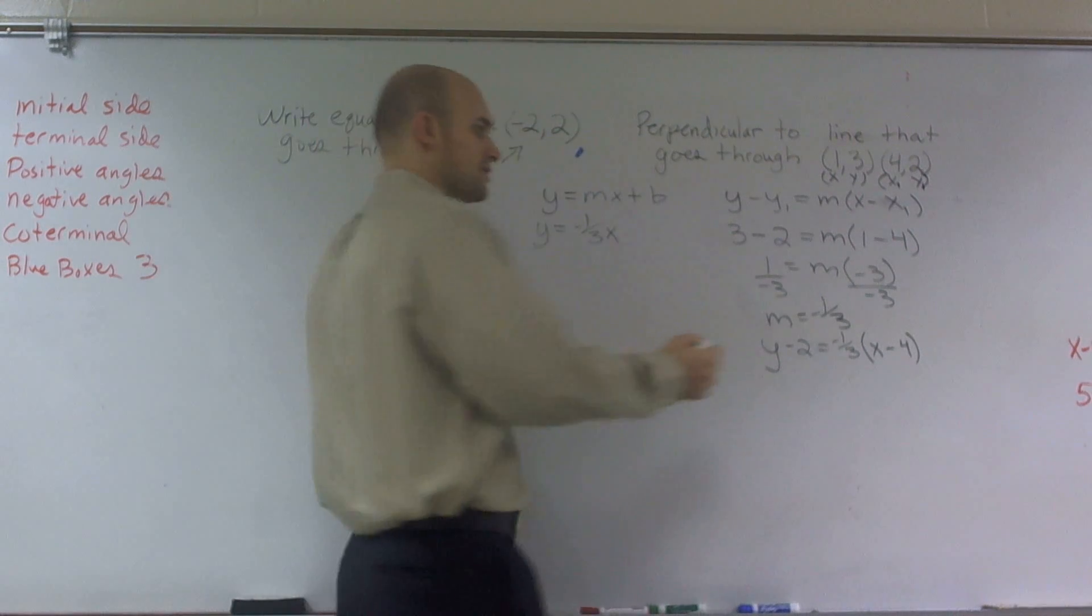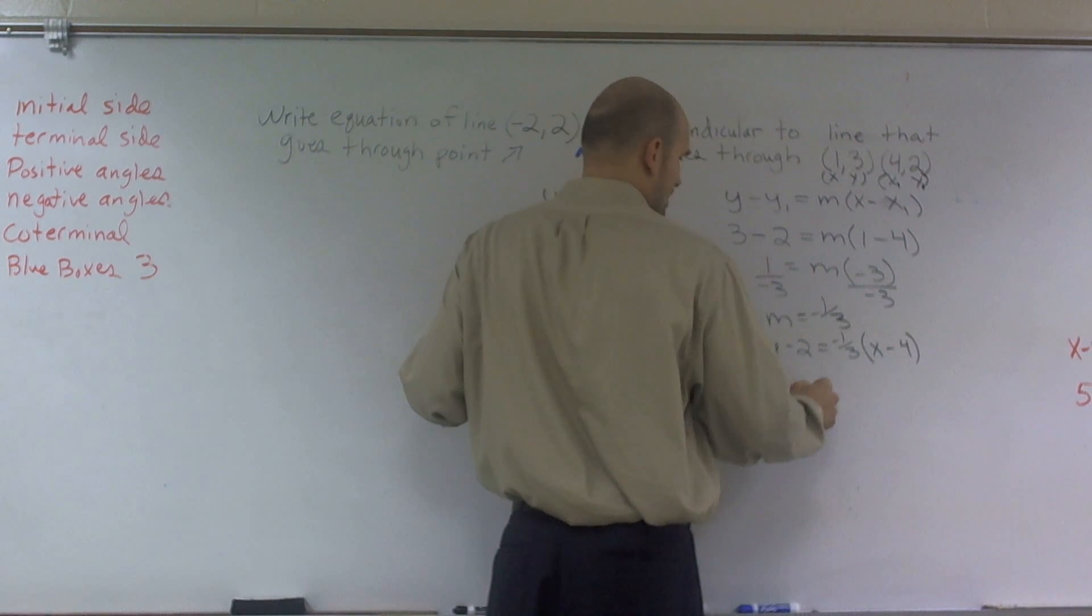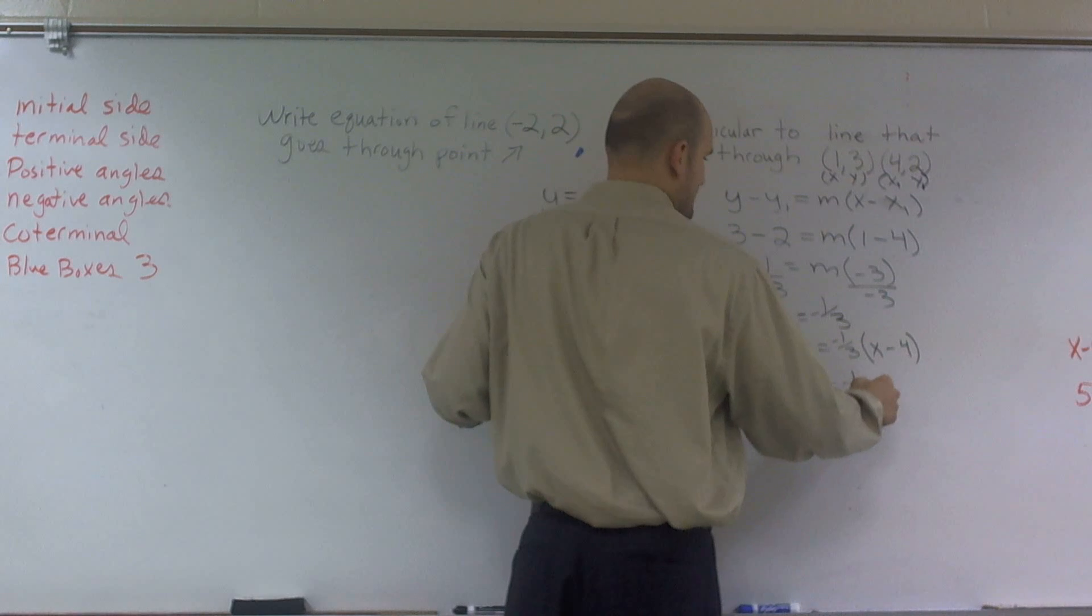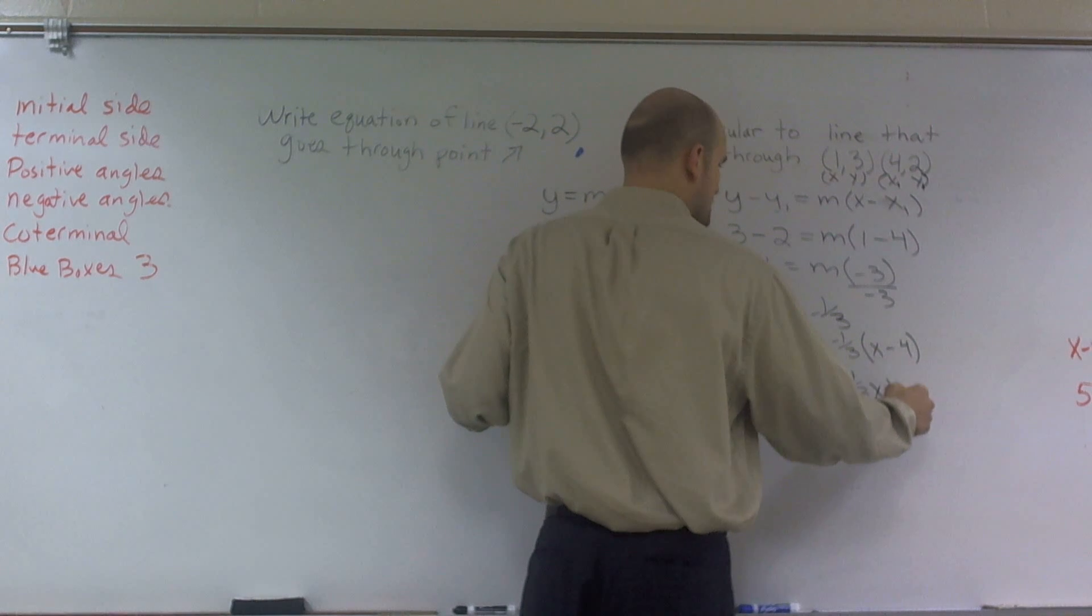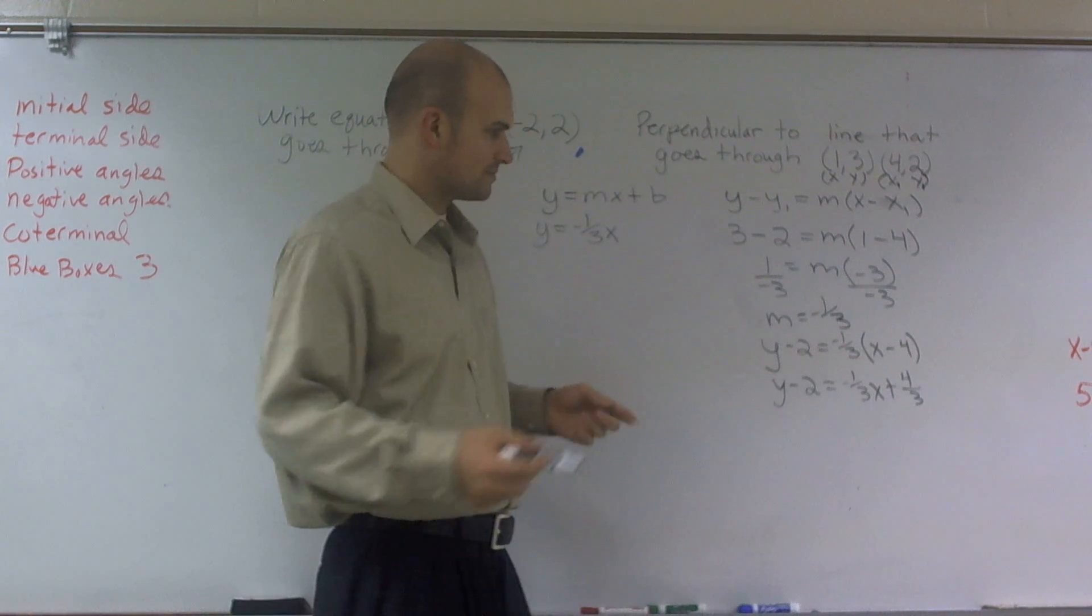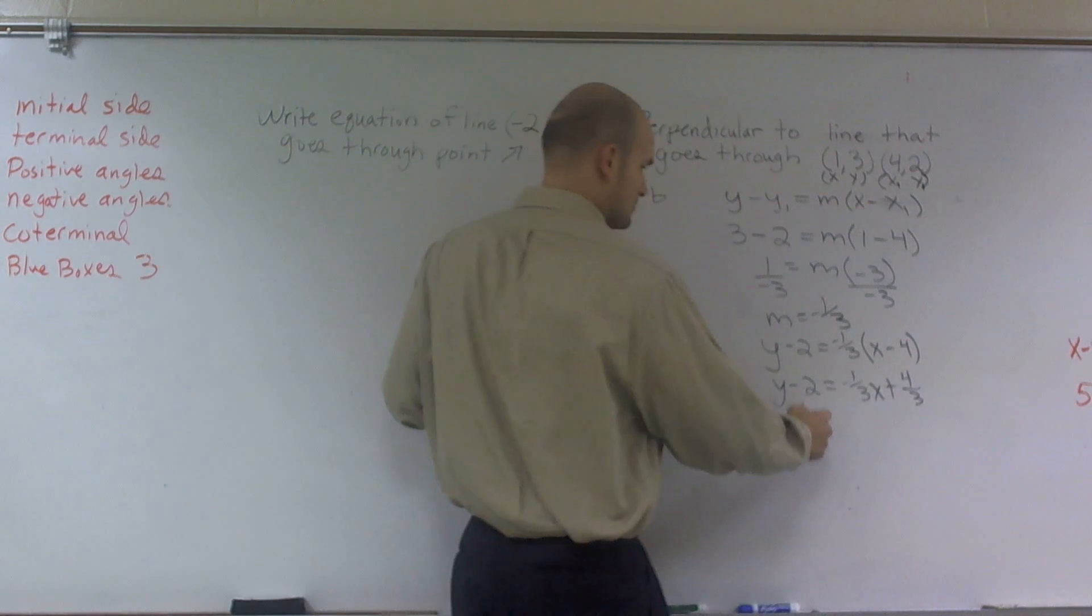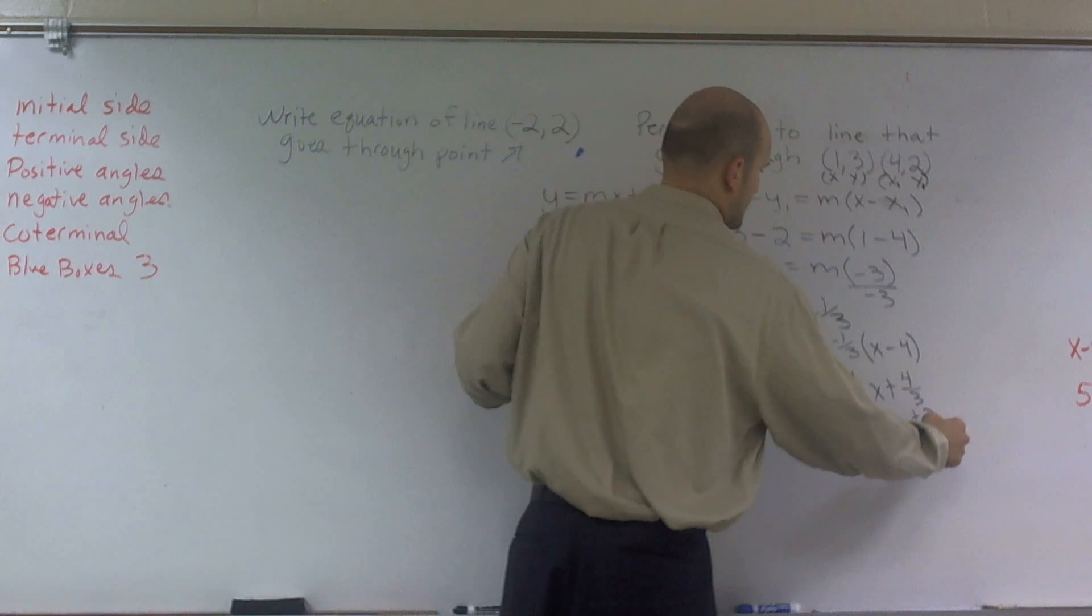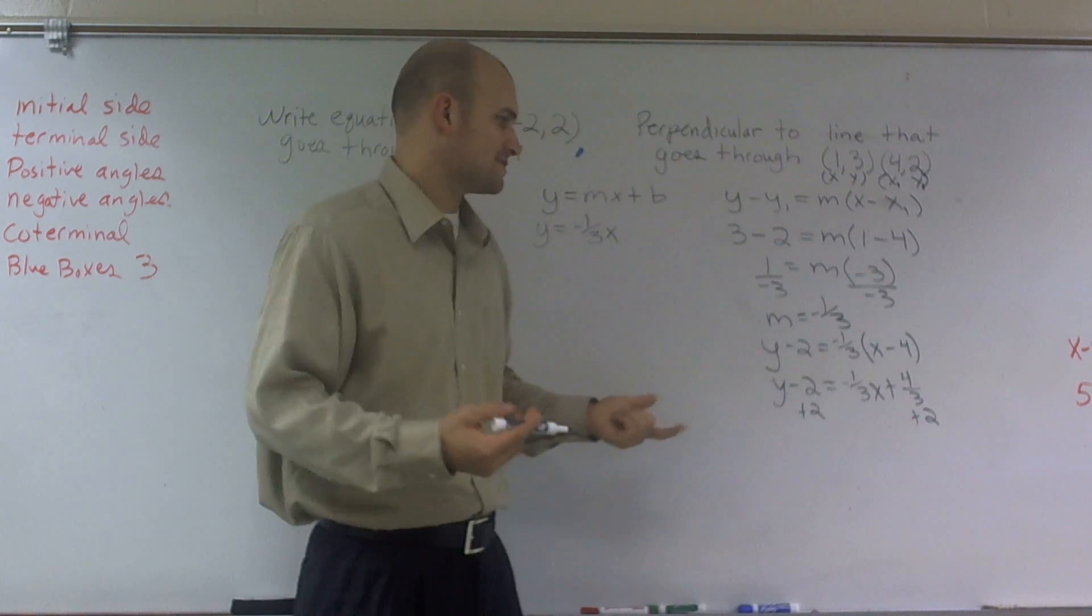So I have y minus y1, which will be 2, equals my new slope, negative 1 third, times x minus x1, which is 4. Then what I can do is distributive property. So y minus 2 equals negative 1 third x plus 4 thirds. And then I have to add a 2.